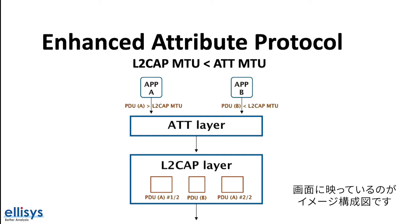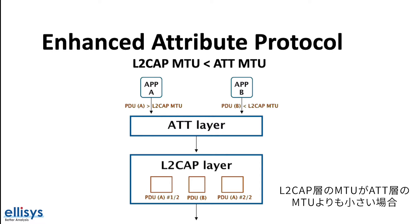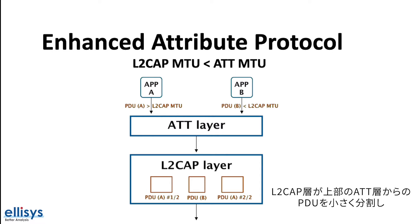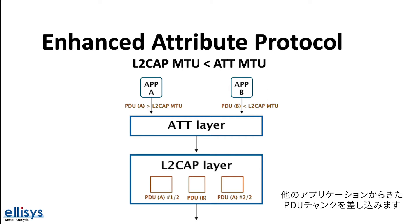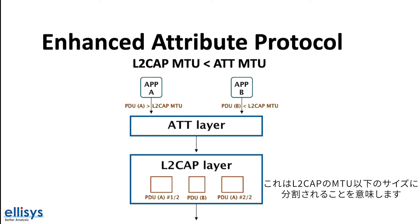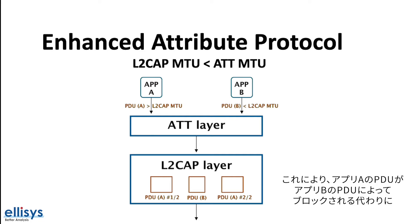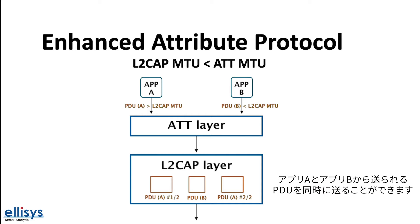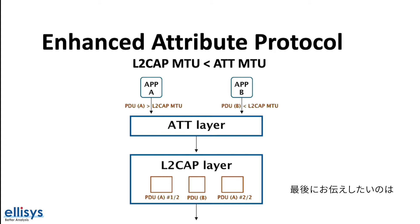Here's an example to better visualize this. If the L2CAP layer MTU is smaller than the attribute layer MTU, then this will cause the L2CAP layer to break up the PDUs coming from the upper attribute layer into smaller chunks and interleave the PDU chunks coming from different applications. So in this example, application A is sending a PDU larger than the L2CAP MTU size, which means it will be broken up into chunks of sizes up to the L2CAP MTU. This will allow the PDUs from application A and application B to be interleaved instead of application A's PDU being blocked by application B's PDU.